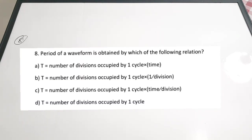Eighth question: if you have used the CRO in your labs, you can answer this simply. The period of a waveform is obtained by which relation? A: T = number of divisions in one cycle × time. B: T = number of divisions × 1/division. C: T = number of divisions in one cycle × time per division. The correct answer is option C — time period T equals the number of divisions occupied by one cycle multiplied by time per division.